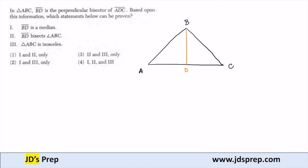And it's perpendicular, so now I know that these are right angles here. And it's a bisector, so I know that AD is going to be congruent to CD.